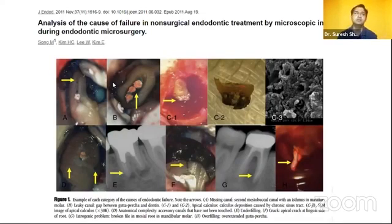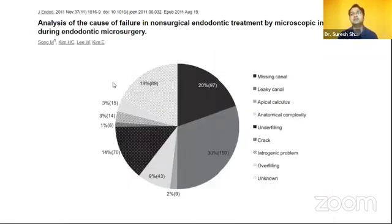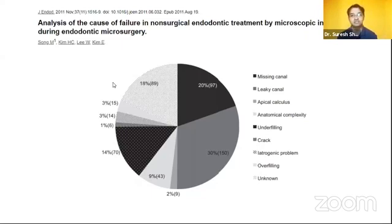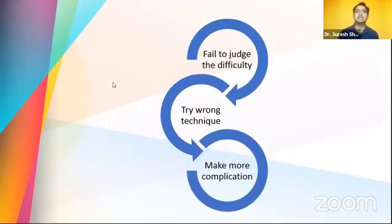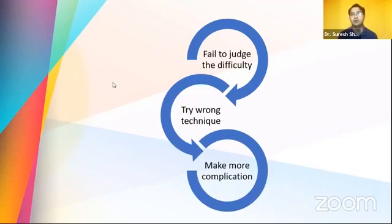What are the main reasons for failure? There is an article published in the International Journal of Endodontics — a very good article. Most of the time we decide on failure based on X-rays, but in this article, failure reasons were evaluated when endodontic surgery was performed. They concluded that missing canals, leaky canals, anatomic complexities, and calcification are the maximum reasons for failure.